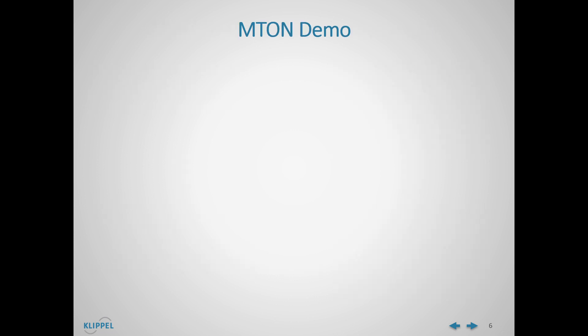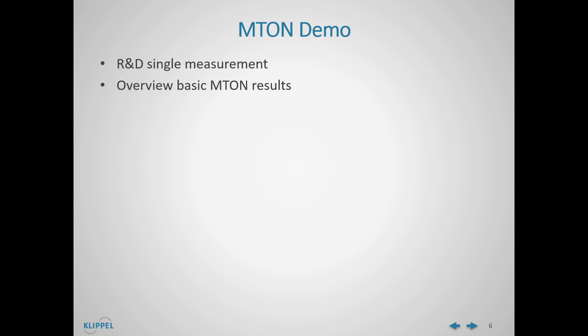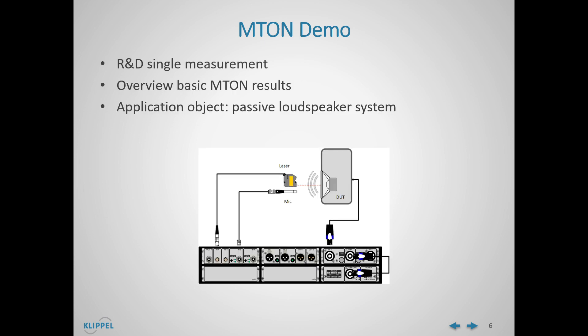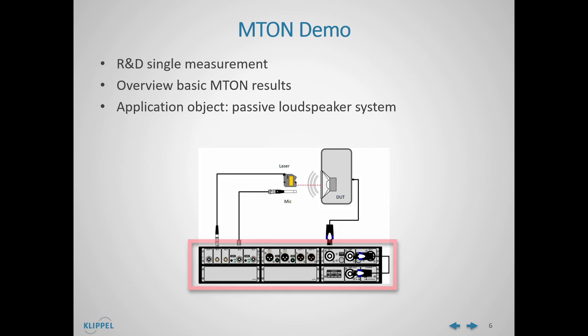Now we will perform our first multi-tone measurement. To do it, we will use the Clipper solution for R&D environment, the M-tone module. In this case, we will perform a single R&D measurement. The target of this measurement is just to overview the basic M-tone results. As application object, we will use a passive loudspeaker system. As measurement device, we will use the Clipper analyzer KO3 system.